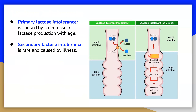Secondary lactose intolerance, on the other hand, is rare. It is caused by illness such as a stomach bug or more serious issues like celiac disease. Inflammation in the gut wall can lead to a temporary decline in lactase production. The symptoms disappear if milk or other sources of lactose are excluded from the diet or consumed only sparingly.